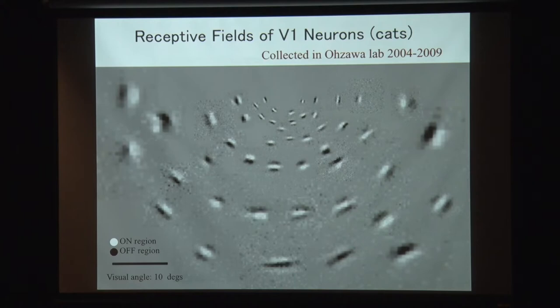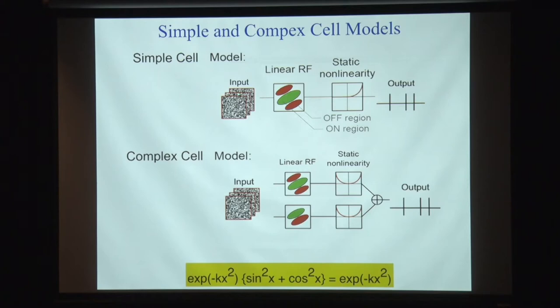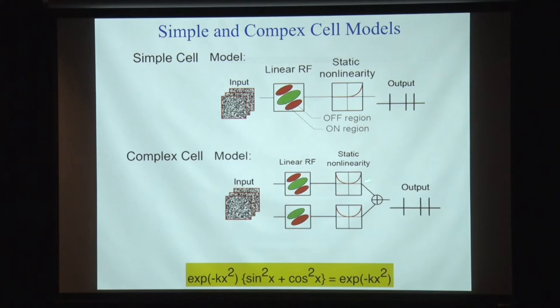Those simple cells are modeled with a linear receptive field — mainly Gabor functions going through static nonlinearity and then a spiking generator. Combining those simple cells, usually a minimum of four subunits, or computationally you can get away with two units of even and odd symmetric Gabor functions, then do full-wave rectification, squaring, and add the two. That's the simplest model of a complex cell.